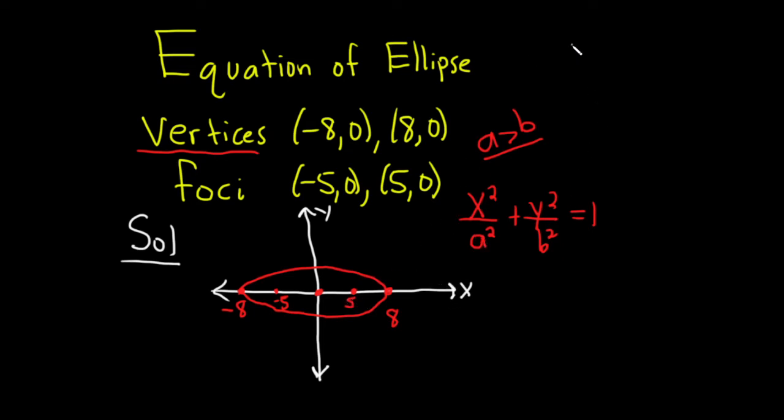If it was vertical, then the bigger number would go under the y. We would have a² under the y instead of the x. So we just need a and b.